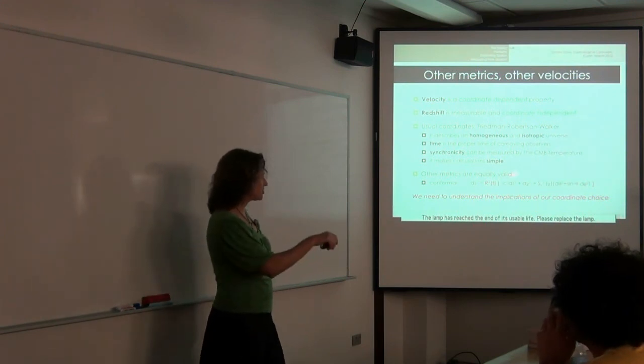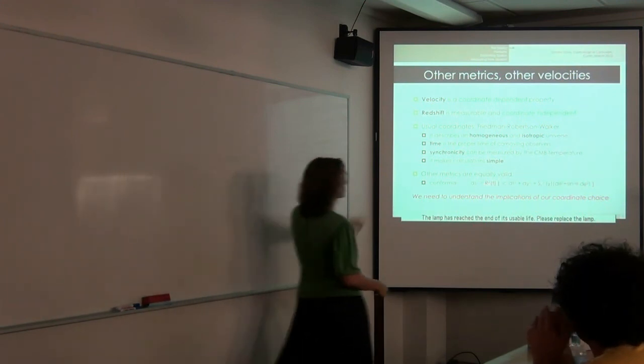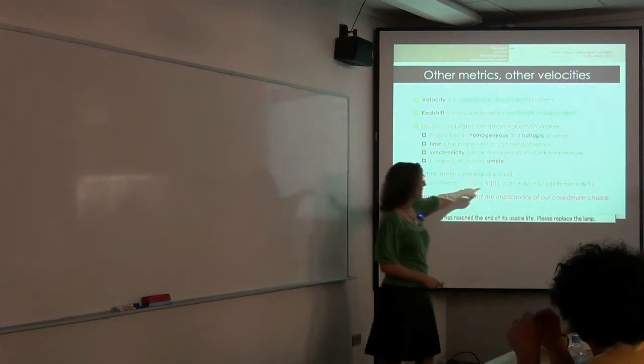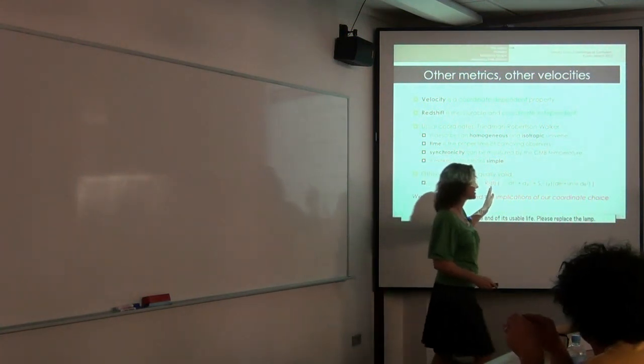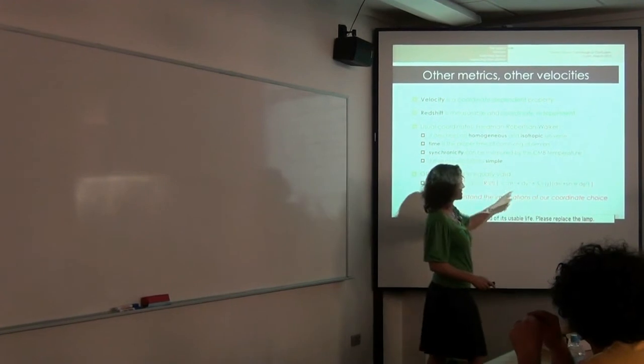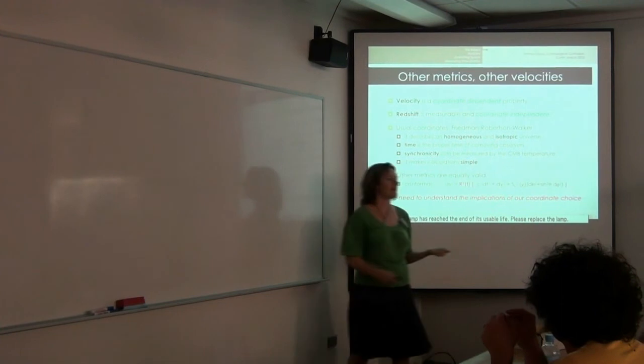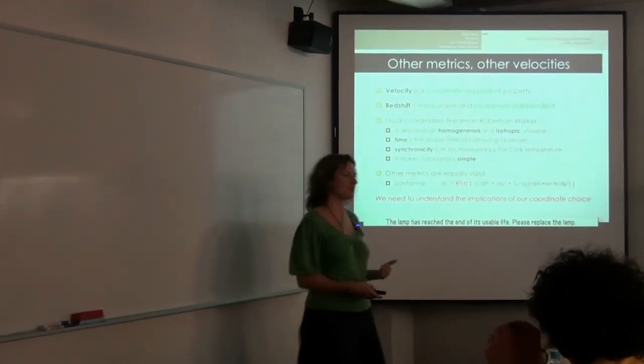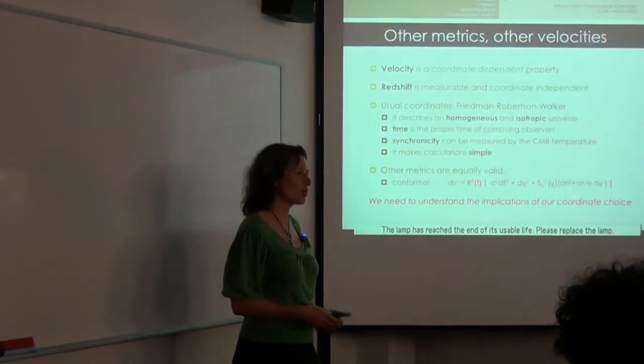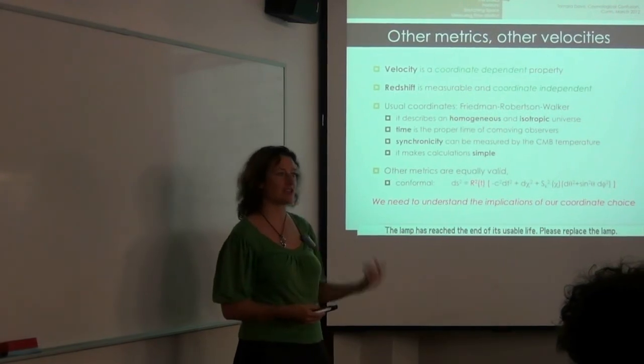You can choose other metrics. For example, if you use conformal time, the scale factor comes outside of this entire thing, not just outside of the spatial coordinates, but outside of the temporal coordinates as well. And then you are in a situation where the speed of light limit is restored again because of your redefinition of time.